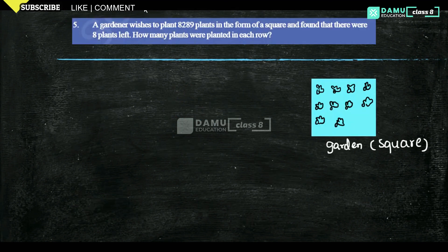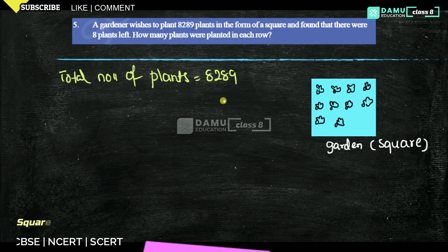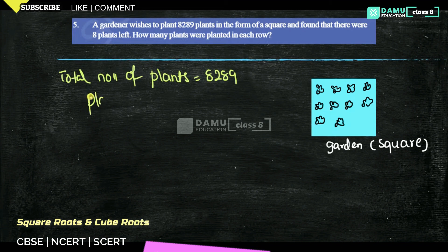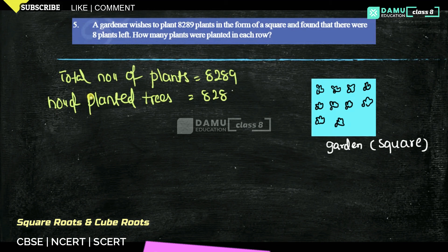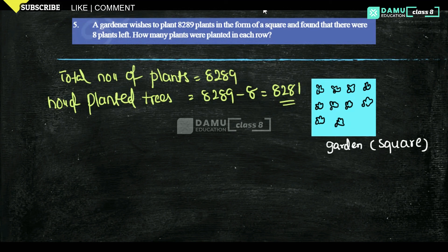Our next question: a gardener wishes to plant 8289 plants in the form of a square and found that 8 plants were left over. How many plants were planted in each row? Total number of plants = 8289, and 8 plants were left. So number of plants actually planted = 8289 − 8 = 8281 plants.